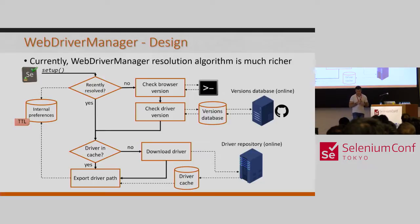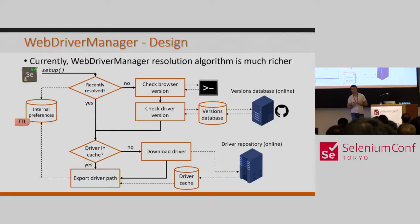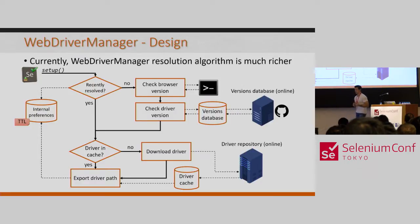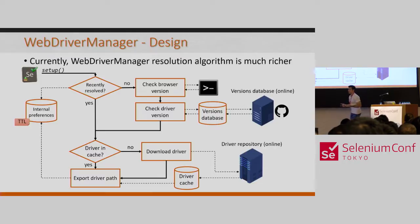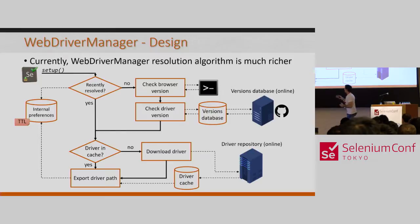This is the first novelty in the current status of WebDriverManager. The other thing we require is to know the browser version. We need a method to find out which version of the browser we are going to use. For that, we run a command in the shell to find out that version. WebDriverManager knows a set of commands for different platforms and different browsers in order to get the browser version.